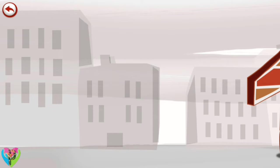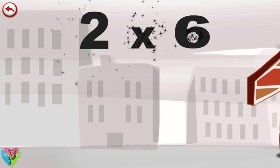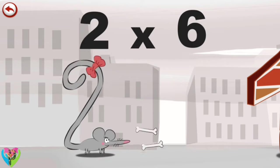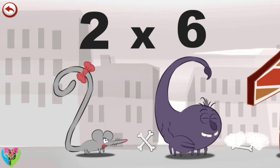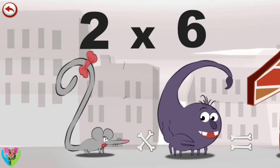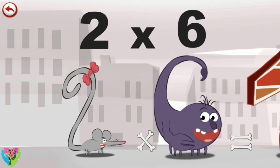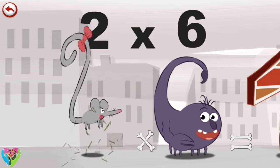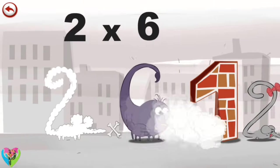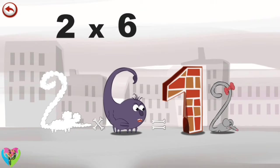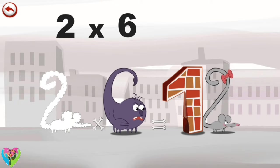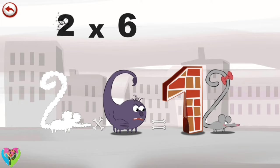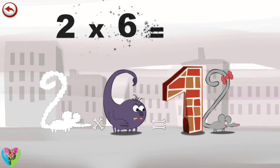What's the story of two times six? When Two Squeaks sees Scorpius the scorpion, she is frightened he will sting her. She is terrified and runs away. She scurries down a mouse hole and hides behind a wall in the shape of a one. Two Squeaks is safe at last. Two times six is twelve.